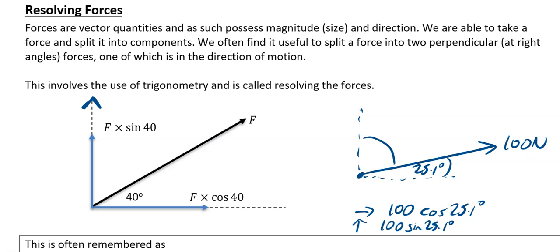In this one, if we're determined to use cos, you'd have to do 90 minus 25.1 degrees. And it gets a bit trickier to do that. So just use cos if you've got the angle, and use sin if you don't have the angle.